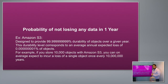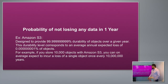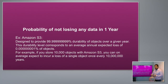If you look at the standard S3, it's 11 nines — 99.999999999%. That means that if you store 10,000 objects, you can expect to lose one object every 10 million years. The more objects you have, the more exposure you get, but 11 nines gives you this level of protection.